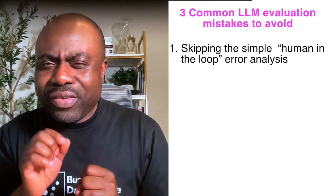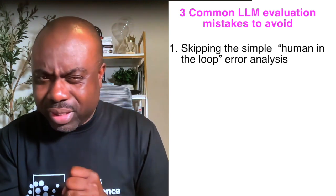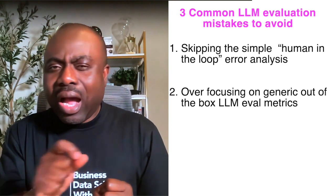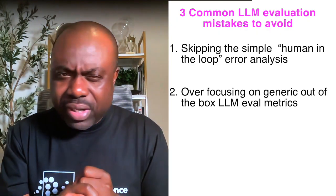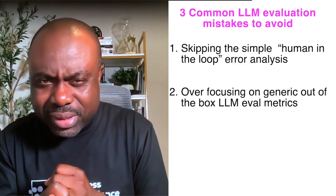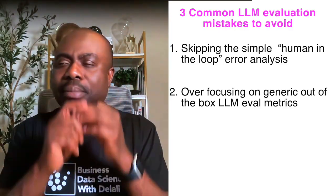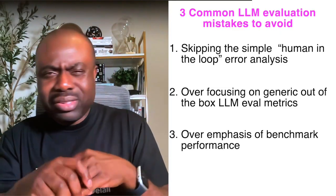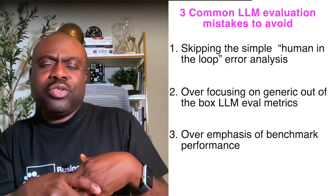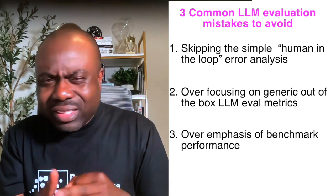To recap, today I've reviewed three common mistakes people make when evaluating large language models. Number one: skipping simple human-in-the-loop error analysis. Number two: using generic out-of-the-box LLM evaluation metrics — instead, come up with your own metrics meaningful for your use case. Number three: over-emphasizing benchmarks instead of generating your own user interaction data. I hope this is helpful, and we'll share more insights on how to better evaluate your large language models. Talk to you later!